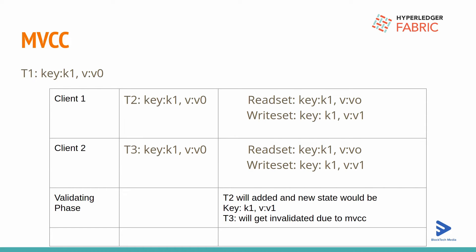Transaction T1 is already added into the blockchain with key1 at the current version. Next, there are two different clients doing transactions on the same asset, key1 - Transaction T2 and Transaction T3. At that time, the asset key1 has version V0 for both cases. The client sends the proposal to the endorsing peer, which creates a read set and write set. For both T2 and T3, the read set will be key1 at version V0, and the write set will be key1 at version V1 - they are exactly the same.